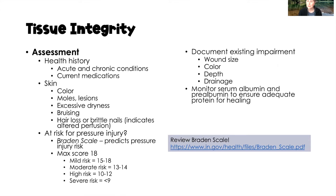If your client is at risk for a pressure injury, the Braden scale is the most common way we predict pressure injury risk. The max score is 18. Anything less than a score of 9 is severe risk. High risk is 10 to 12, moderate risk is 13 to 14, and mild risk is 15 to 18. If you need a refresher on the Braden scale, I will put a link in the description box for you to review it.